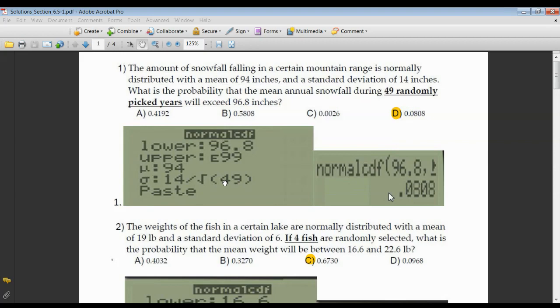Number one, amount of snowfall, certain mountain range, normally distributed, mean of 94, standard deviation of 14. What's the probability that the mean annual snowfall during 49 randomly picked years will exceed? Exceed means you're getting bigger than 96.8. So my low bound is 96.8. I'm getting bigger all the way to E99, positive infinity. The mean is 94.